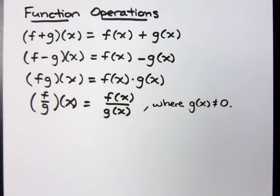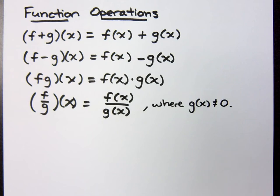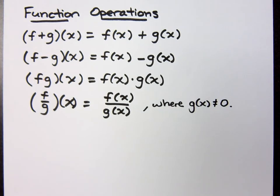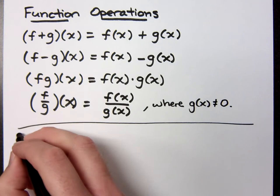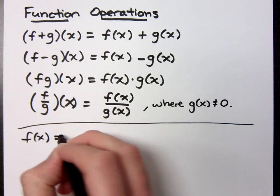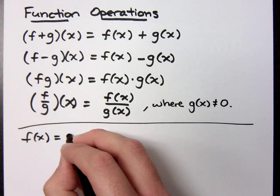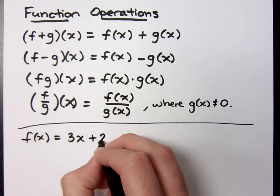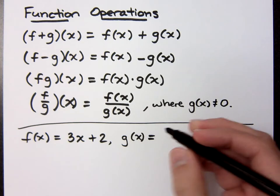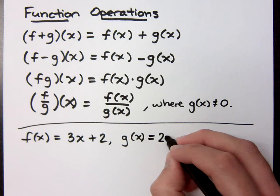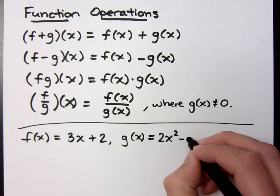You want to make sure that what you're dividing by is not a zero function, because that's just not cool, right? This should be straightforward. So what I'm going to do is give you a few different functions and we're going to work with them. I'm going to say that f of x is equal to 3x plus 2, and g of x is equal to 2x squared minus x.